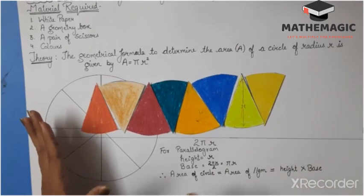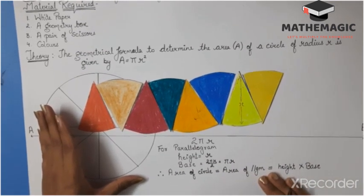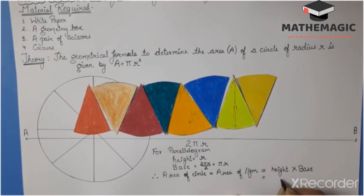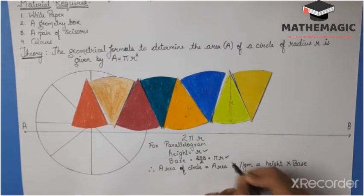Therefore, we can say that the area of the circle is actually equal to the area of the parallelogram, that is height multiplied by base. So, let's multiply. Height is r and base is πr.